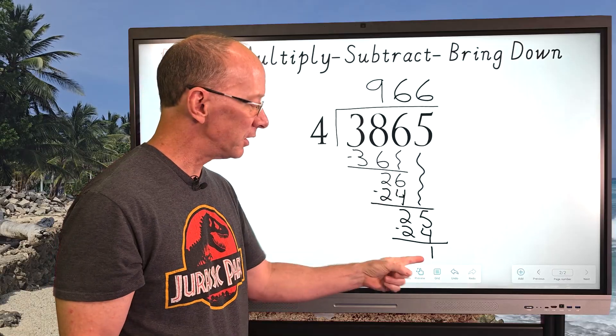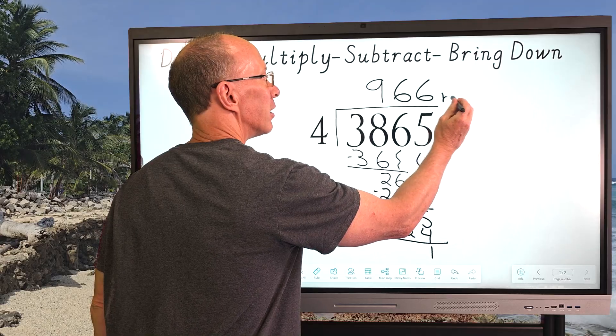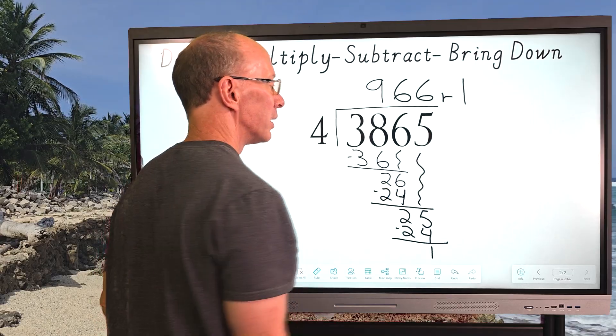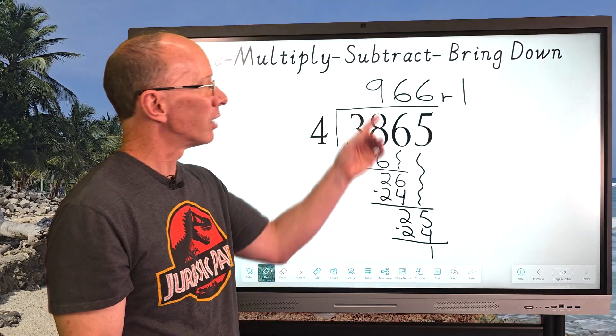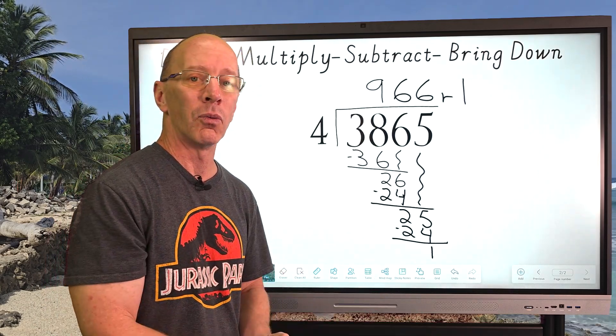Do we have any other numbers to drop down? No. And so this number right here is going to be our remainder. So I'm going to put a little R right here and then put the one. So we have a remainder. So our answer is 966 with a remainder of one.